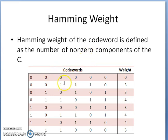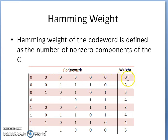The Hamming weight of a codeword is defined as the number of nonzero components of the given codeword. For example, a codeword of six zeros has a Hamming weight of zero because it contains no nonzero components. Another codeword with three nonzero components has a weight of three. You can find the Hamming weight for all such codewords as listed in the table.